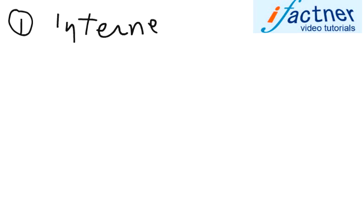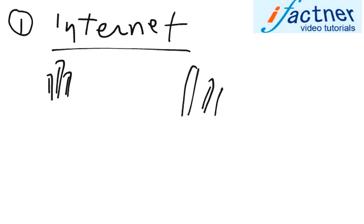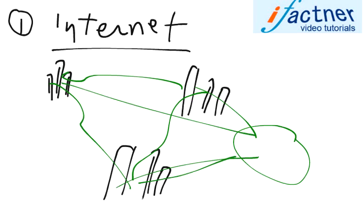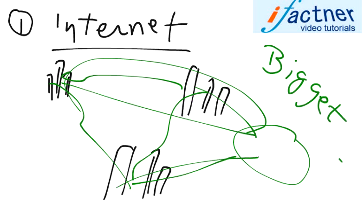as the network of networks. That means all the networks, or most of the networks in the world, are connected together and they form the internet. The internet is the biggest network of the world.